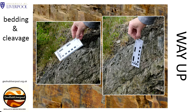On these two photographs you can see an outcrop which shows bedding and cleavage. In the left hand photograph the long edge of the scaled card is parallel to the bedding. In the right hand photograph the long edge of the card is parallel to the cleavage. Notice that in this outcrop the cleavage has a steeper angle of dip than the bedding.